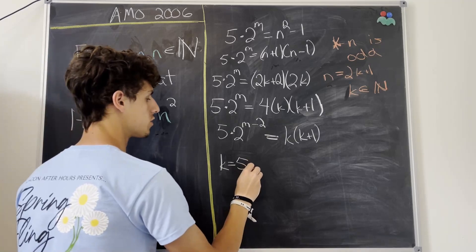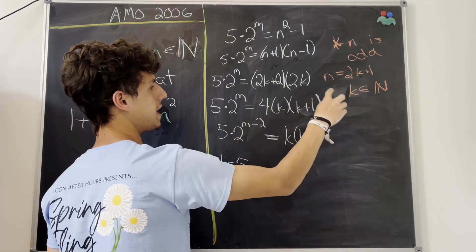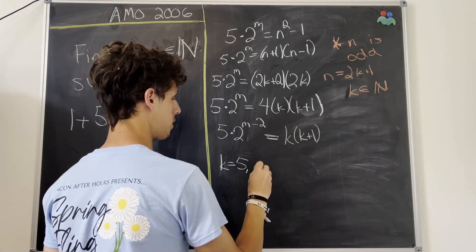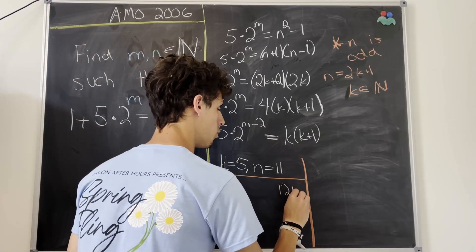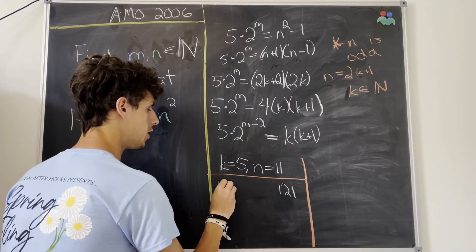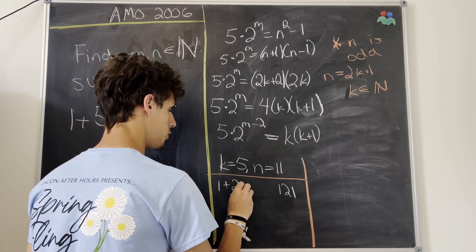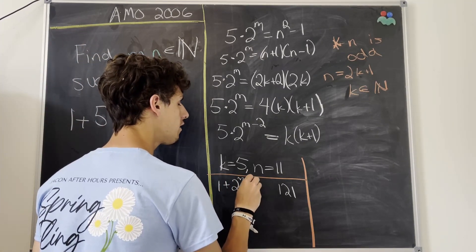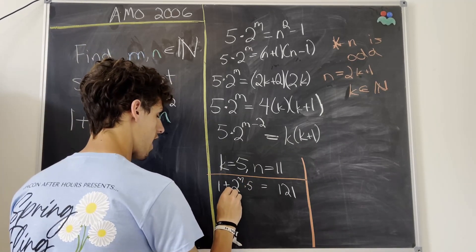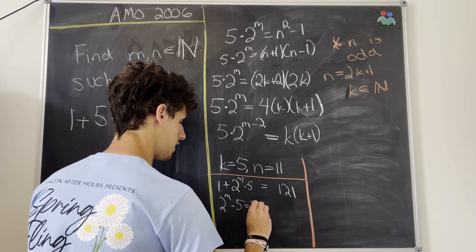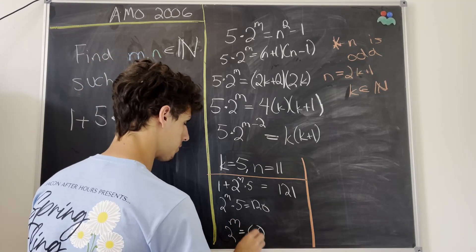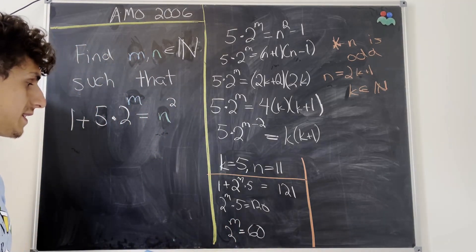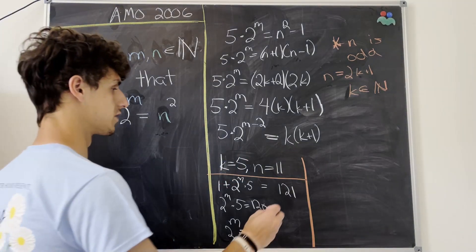So first we'll look at k equals 5. If k equals 5, that means n is equal to 2 times 5 plus 1, but that's 11. So we'll look at this case first. And here we'll have 121, that's n squared, equals 1 plus 2 to the m times 5. But that means that 2 to the m times 5 is equal to 120. But that means 2 to the m is equal to 60. But there's no values of m that satisfy this condition. So let's look at the other case.